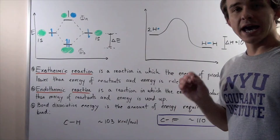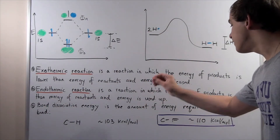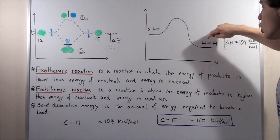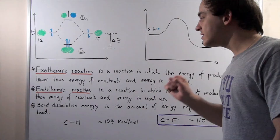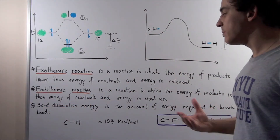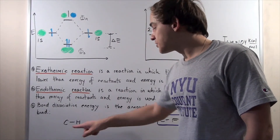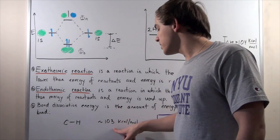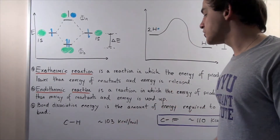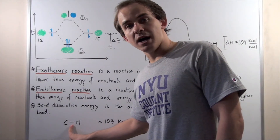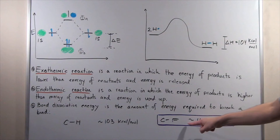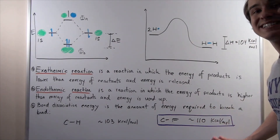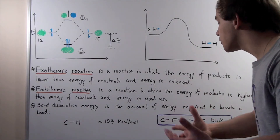Bond dissociation energy is the amount of energy required to break a bond. If we want to break a bond, we need to input some amount of energy — this is the bond dissociation energy. For example, comparing the C–H bond and the C–F bond: the C–H bond has a bond dissociation energy of 103 kcal per mole, meaning it requires that much energy per mole to break the bond between C and H. For C–F, the bond dissociation energy is 110 kcal per mole. Clearly the C–F bond is more stabilized, because more energy is required to break it.